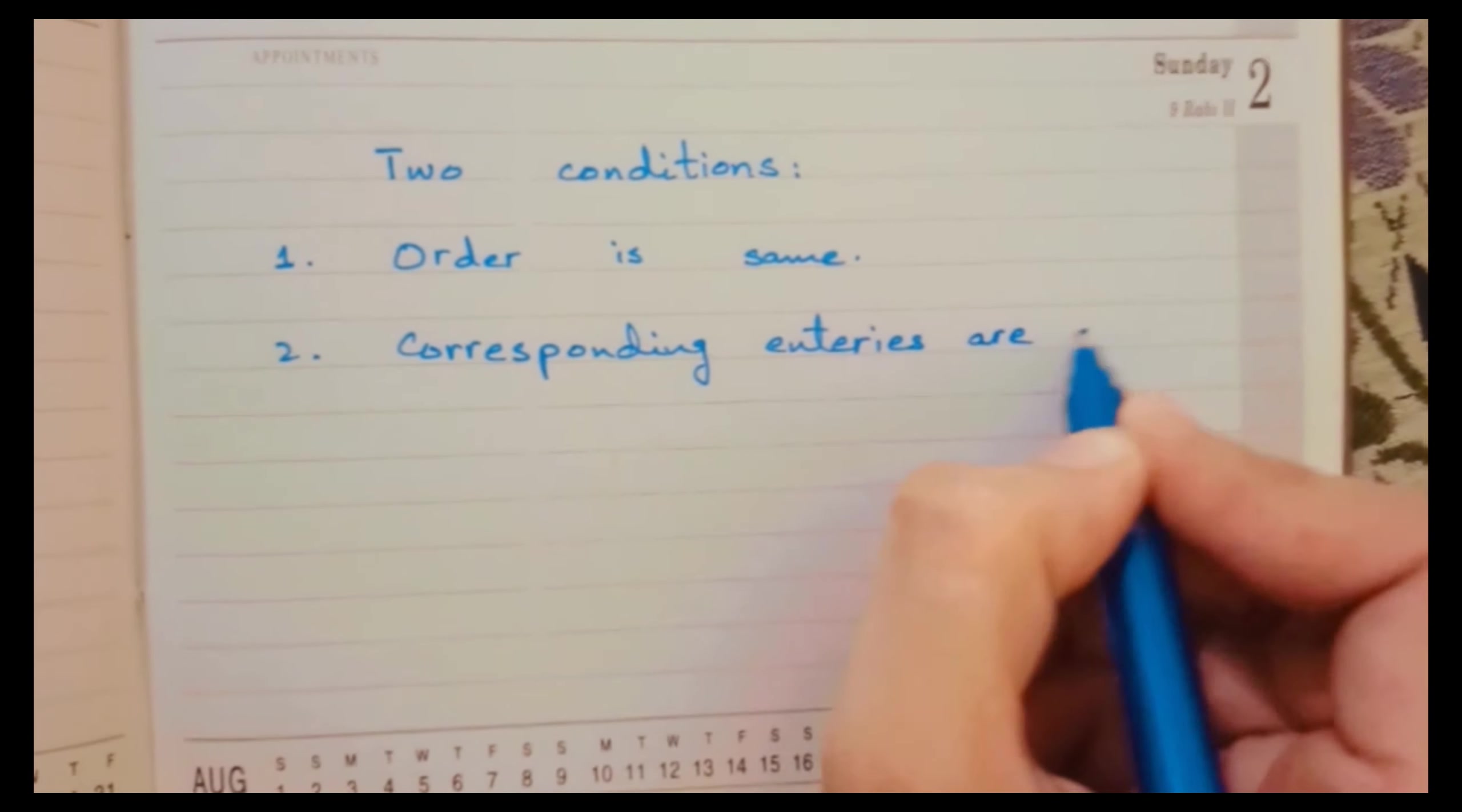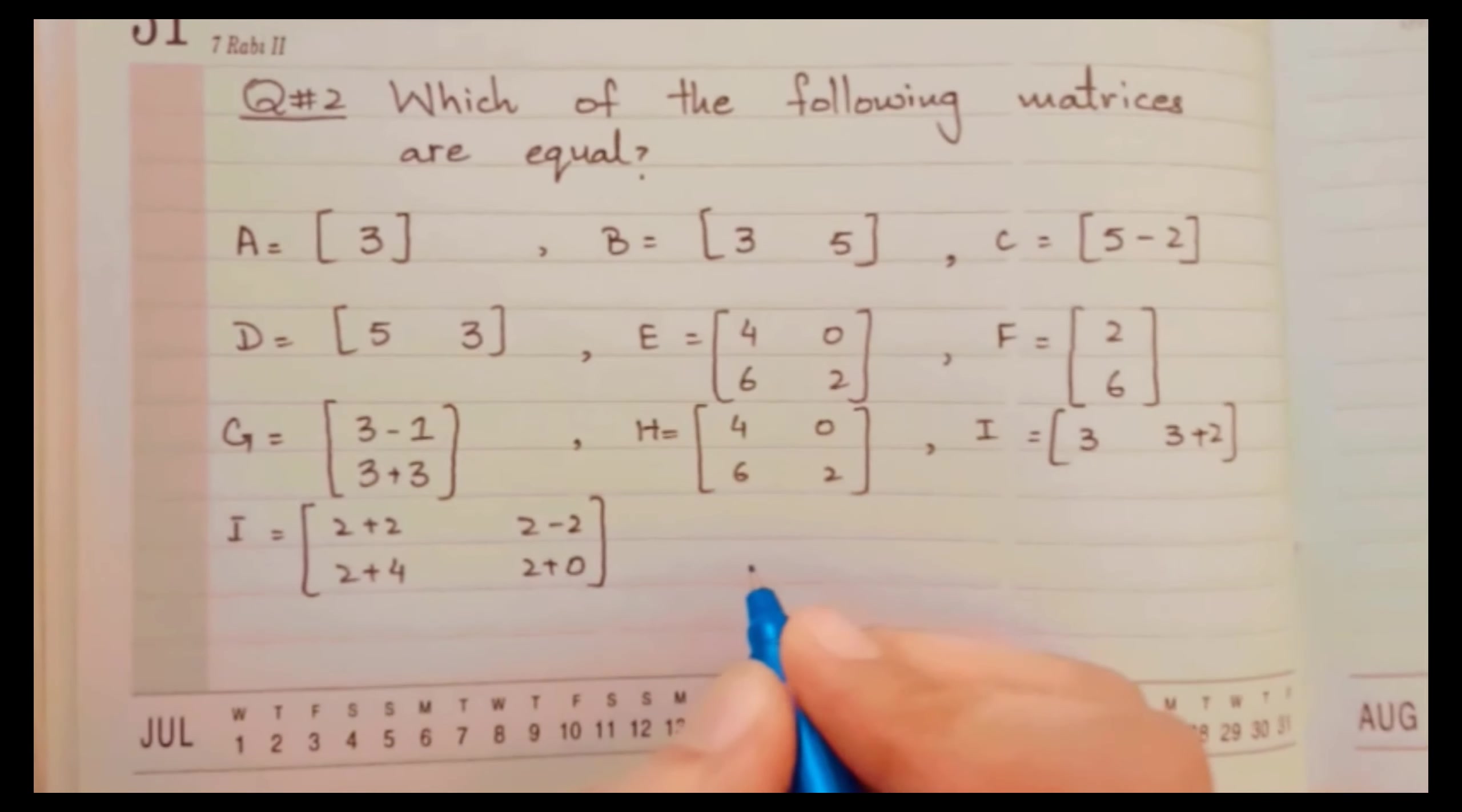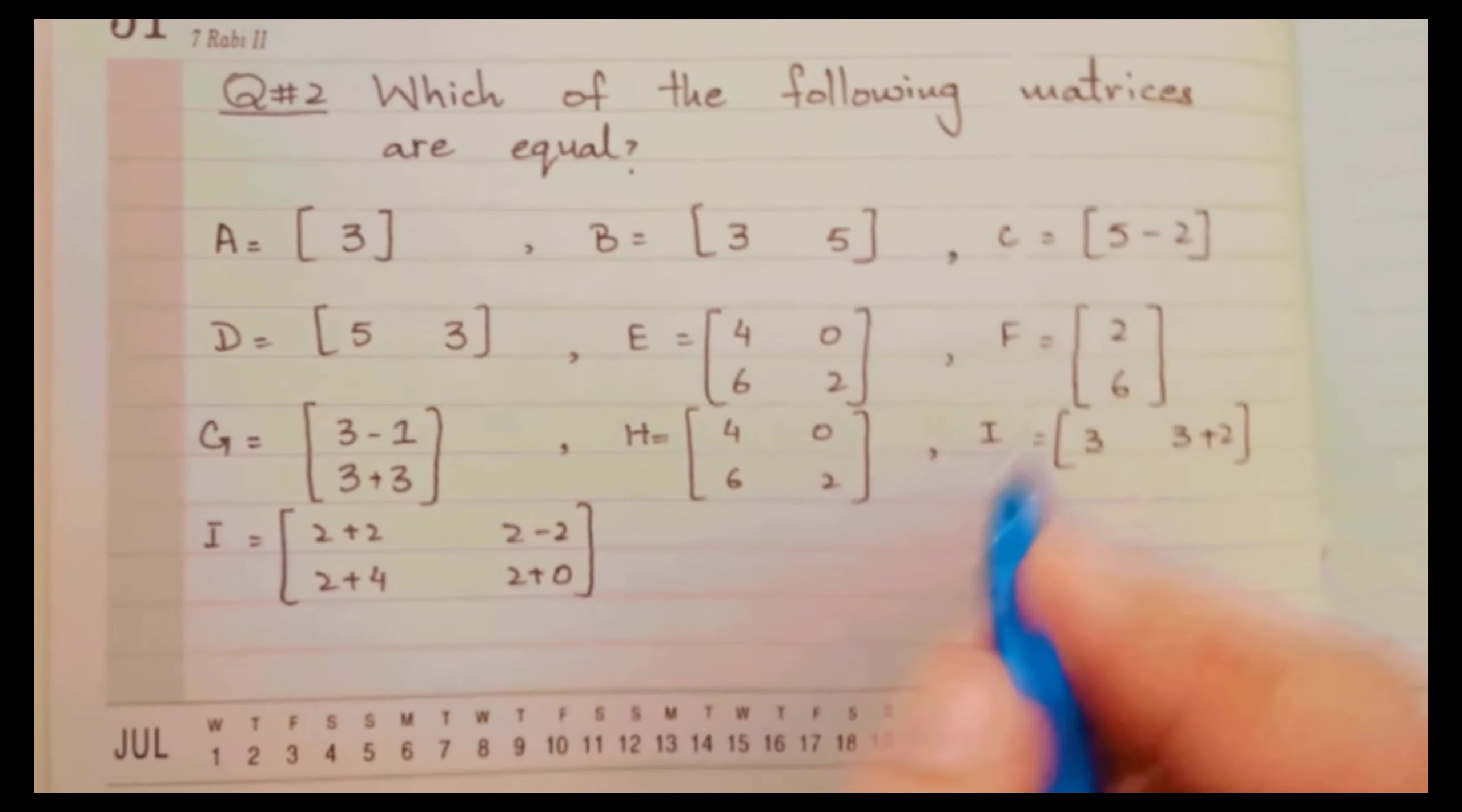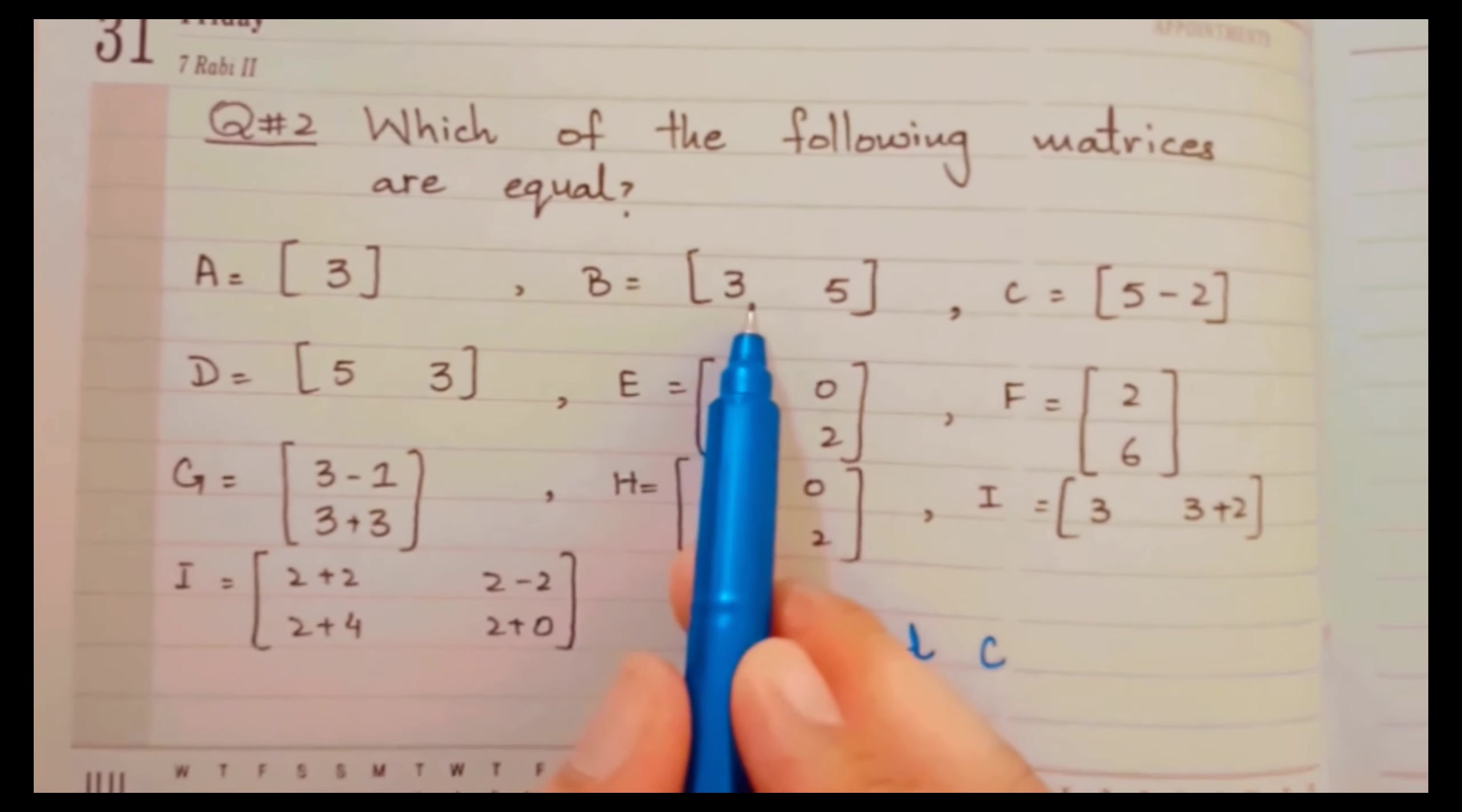Now question number two of Exercise Number 1.1. In this question we have to check which matrices are equal. So first one is A = [3, 5]. If we check the matrix C, there [5 - 2], these two numbers are subtracting, so it means it can give us the answer as 3. So A and C matrices are equal to each other.